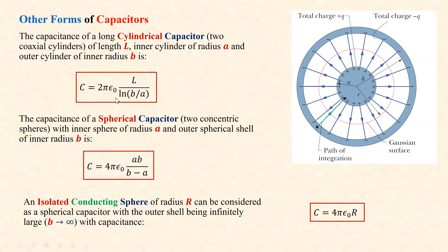We talked about other forms of capacitors. A cylindrical capacitor with inner radius A and outer cylindrical shell of inner radius B has capacitance 2πε₀L / ln(B/A). A spherical capacitor with inner sphere radius A and outer shell inner radius B has capacitance 4πε₀AB / (B−A). If B approaches infinity, we get an isolated conducting sphere with capacitance C = 4πε₀R.